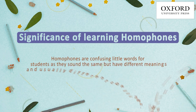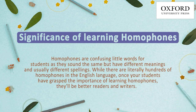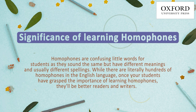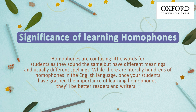Homophones are without a doubt the reason why our students make spelling mistakes on a daily basis. For example, we can confuse mourning spelled as M-O-U-R-N-I-N-G for the word morning spelled as M-O-R-N-I-N-G. Homophones are confusing little words for students as they sound the same but have different meanings and usually different spellings.